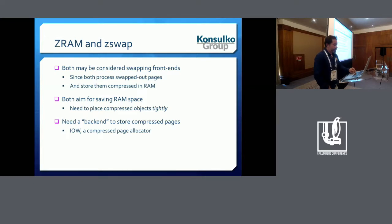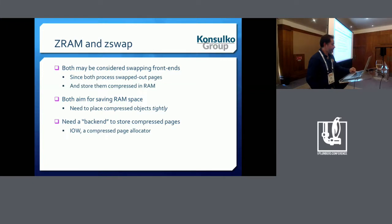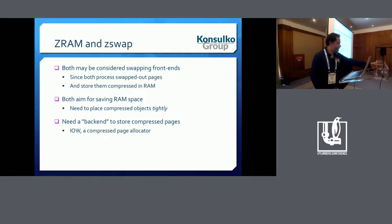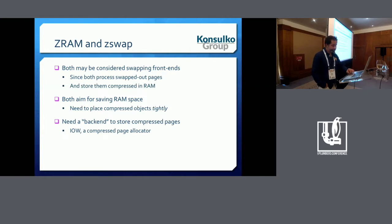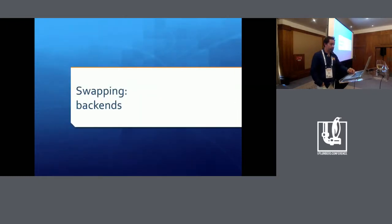In terms of terminology, we would like to address ZRAM and ZSWAP as front ends, because they both process swapped-out pages and store them compressed in RAM — so we call them compressed data front ends. They both need a back end which actually handles storing compressed pages, in other words a compressed page allocator.